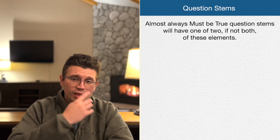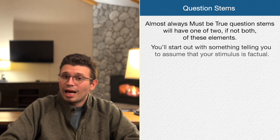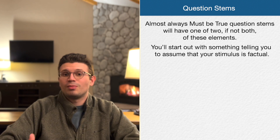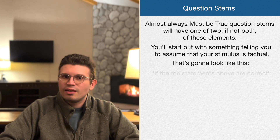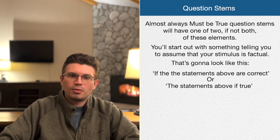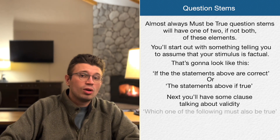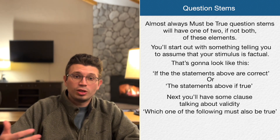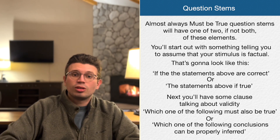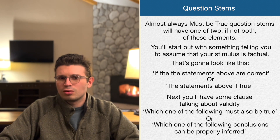How do we recognize must be true questions? It's pretty easy — they stick out like a sore thumb. Almost always, must be true question stems will have one of two, if not both, of these elements. First, something telling you to assume your stimulus is factual — that's going to look like 'if the statements above are correct' or 'the statements above, if true.' Next, you'll have some clause talking about validity, like 'which one of the following must also be true' or 'which one of the following conclusions can be properly inferred.'